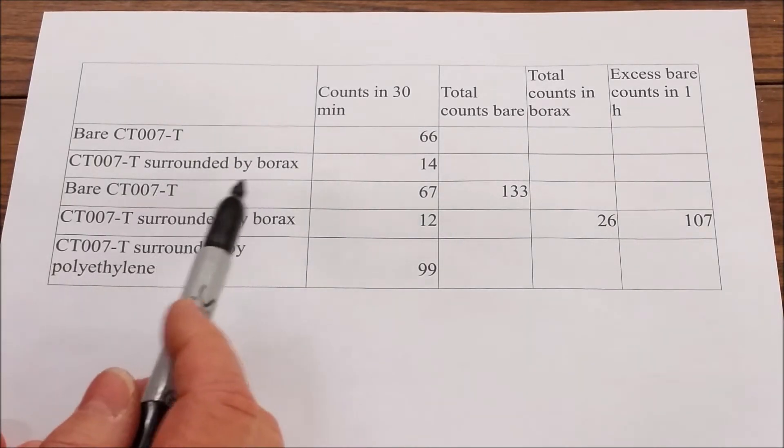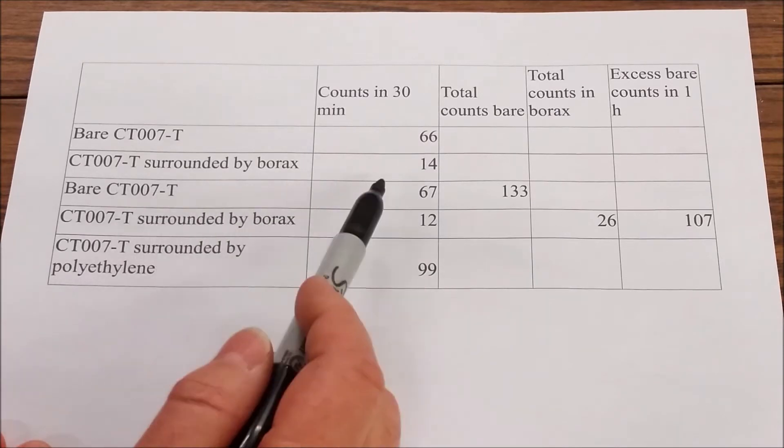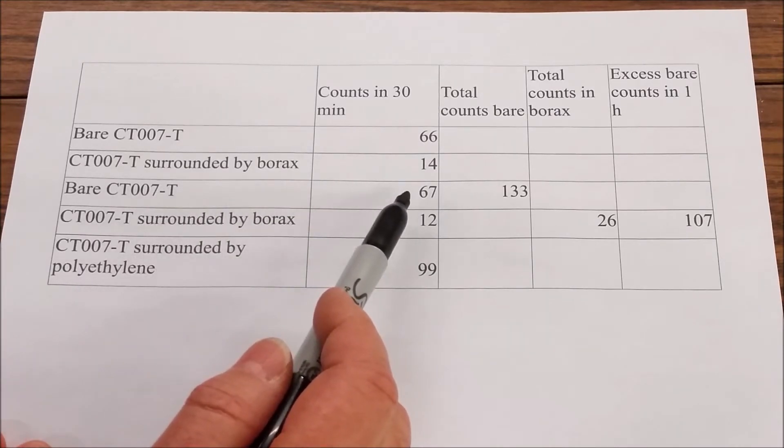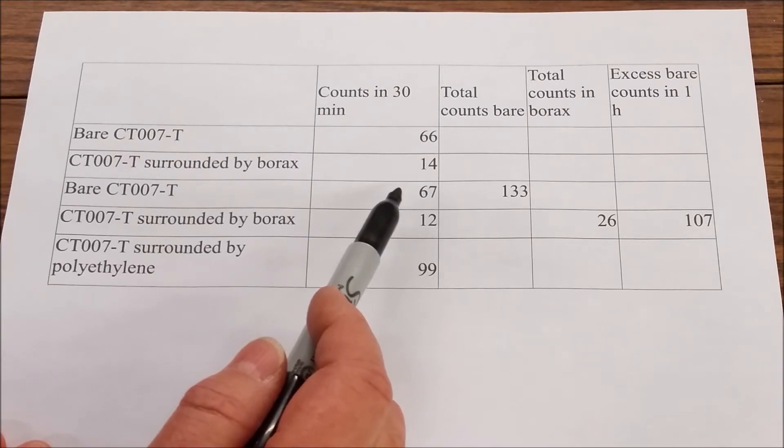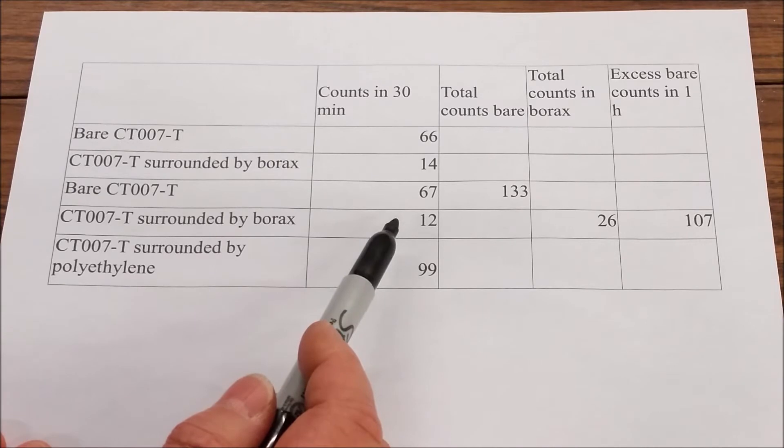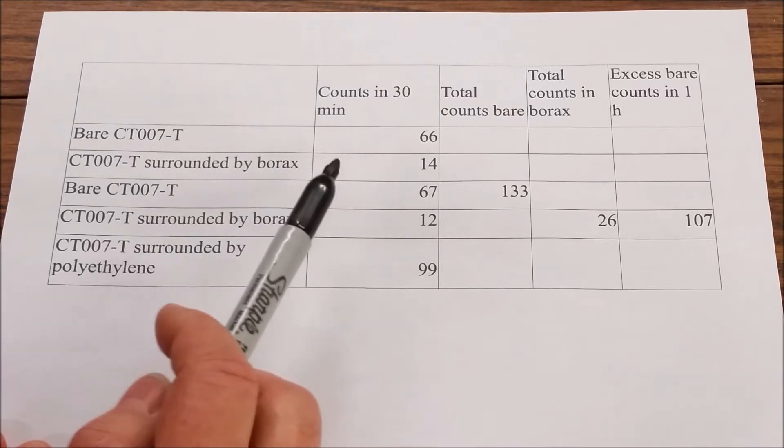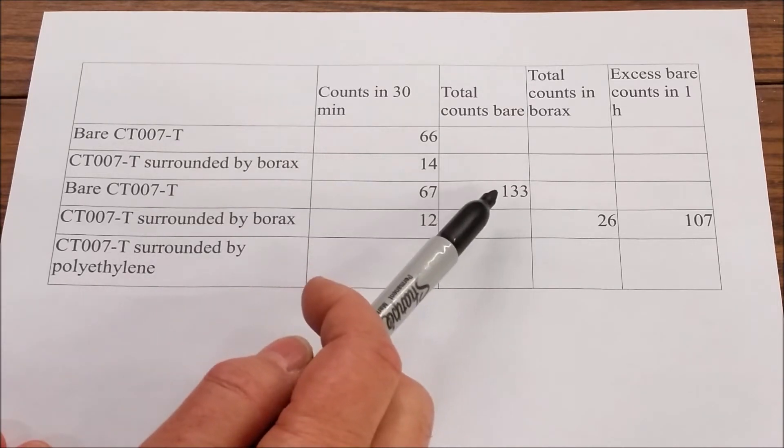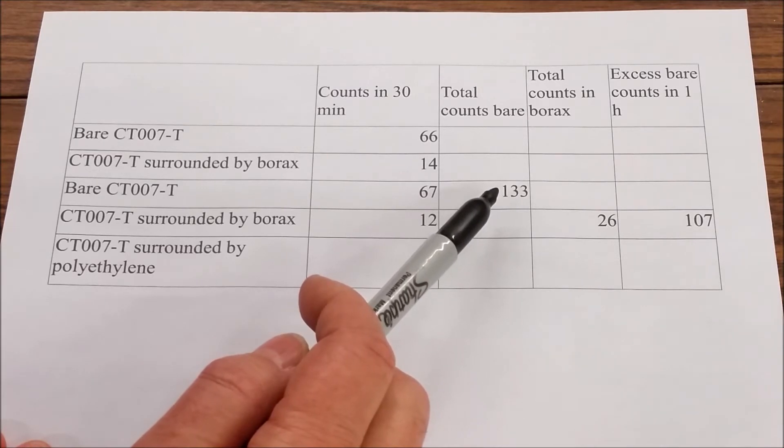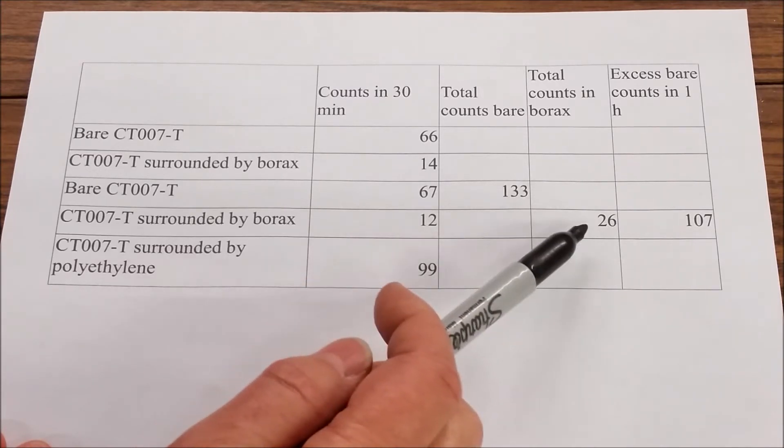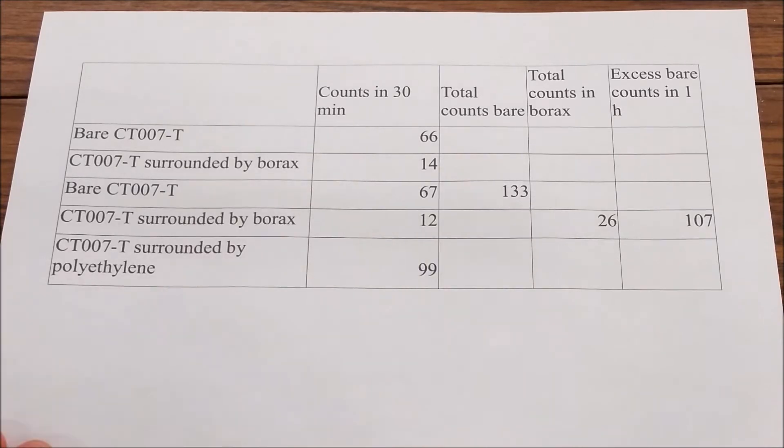And then we repeated it just to make sure that our results are reproducible. So on the next 30 minute count with the bare neutron detector, we got 67 counts in 30 minutes. And in borax again, we got 12 counts in 30 minutes, which gives us a total count in an hour of 133 counts bare and 26 counts inside of borax. And that gives us a net 107 neutron counts per hour.